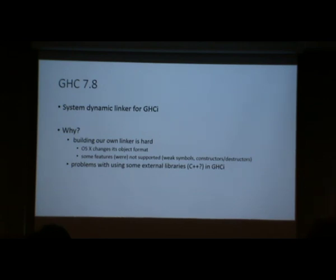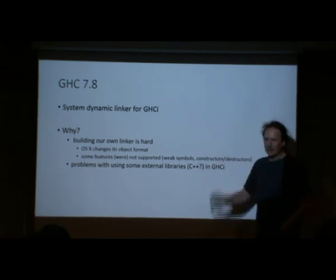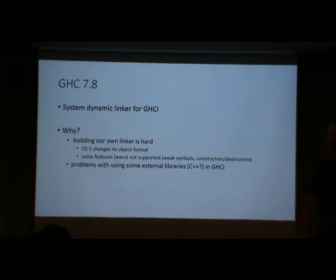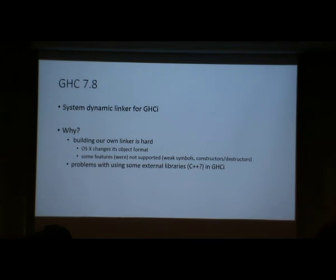How does that work? Well, you have to build all of your Haskell code as dynamically linkable Haskell code, and then it can be linked into the running binary for GHCi. Some other reasons to get rid of the custom linker: OSX keeps changing its linker format, so it was quite hard to track that and we don't really have all the features implemented, so some things didn't work properly. Some C++ features in particular are not implemented by our runtime linker, which means that C++ libraries in GHCi didn't work as well.